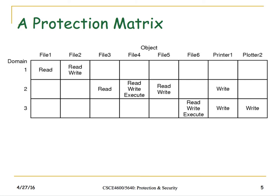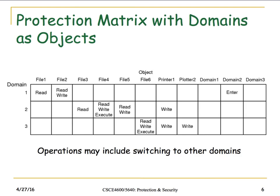We can build a protection matrix that shows, for each object or resource, what activity is allowable in each protection domain — think of these as different user accounts. The area of most concern is where there's overlap; we can also include domains as objects so switching between domains is also represented in the same matrix.